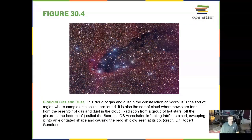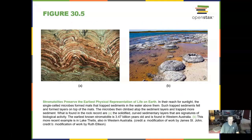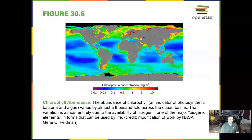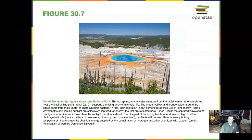Cloud of gas and dust. We can find the earliest physical type of life on Earth in the preserved stromatolites. The abundance of chlorophyll, which helps with the synthesization of bacteria and algae, varies greatly over the ocean due to the availability of nitrogen.